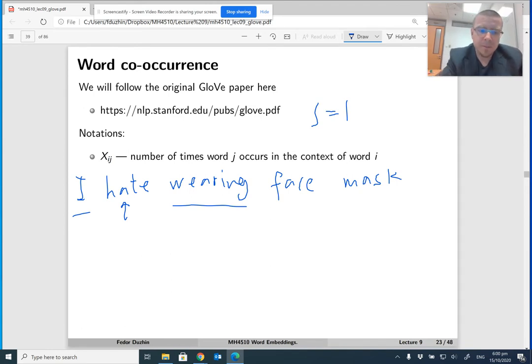So it means that if the window size is 1, then say x hate,I is 1, but x hate,face. So face does not, if the window size is 1, then face does not appear in the context of hate because the face is two words apart from hate, so it's 0.